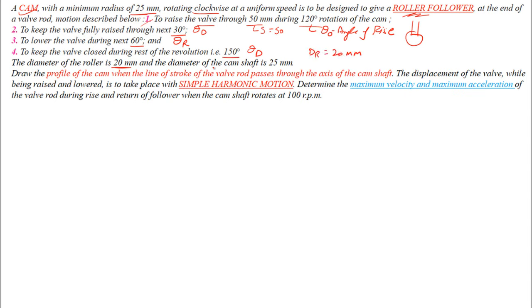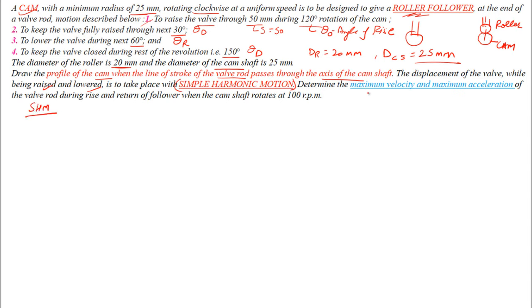The diameter of the roller is 20 mm, and the diameter of the camshaft is 25 mm. The line of stroke of the valve rod passes through the axis of the camshaft, so the roller axis passes through the camshaft axis. The displacement during rise and return follows simple harmonic motion. We also need to find maximum velocity and acceleration of the valve rod at n = 100 rpm.